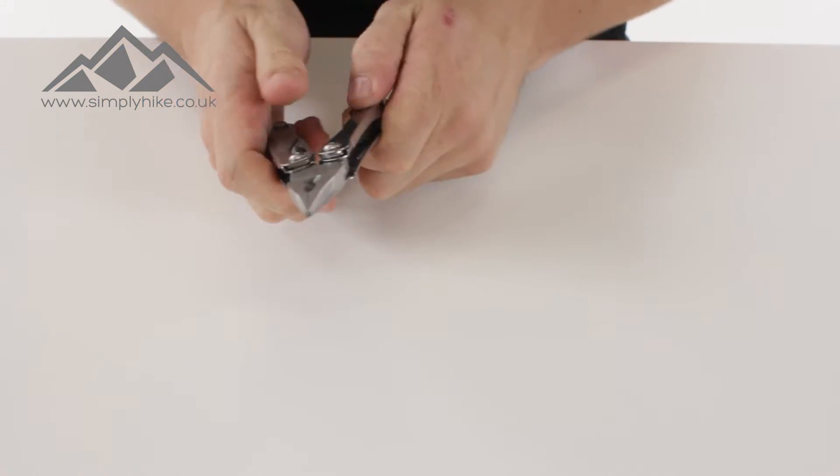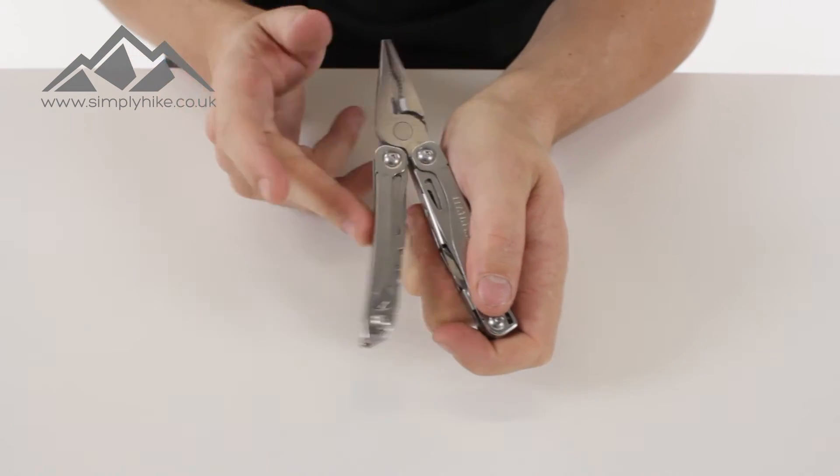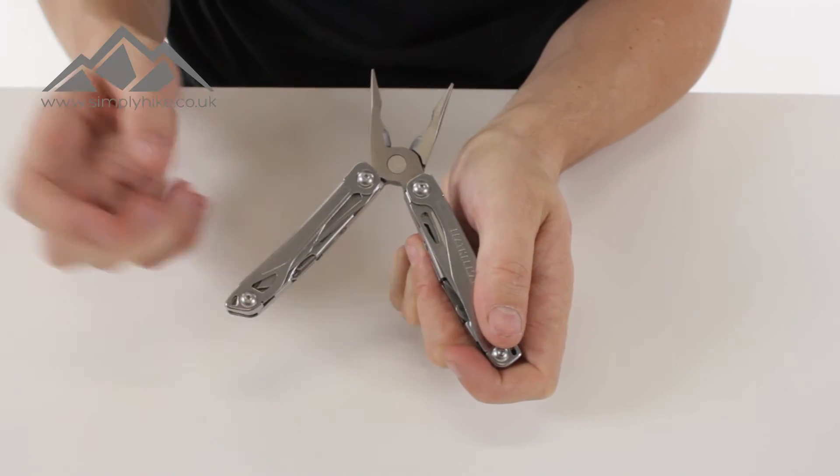As we open up the wingman, you'll notice obviously you've got your standard pincers on the top there. Now, that does have a slight elastication. As you can see, it's pinging back on there. That means it's going to give you all the grip that you need.